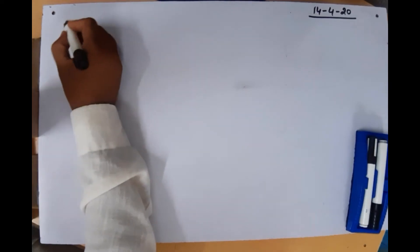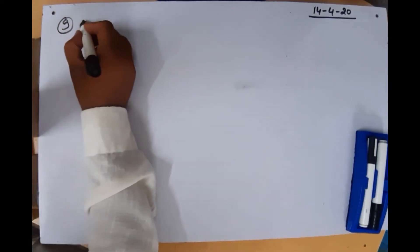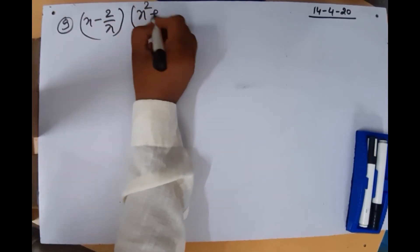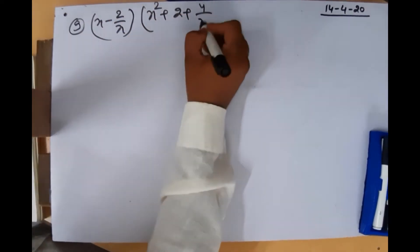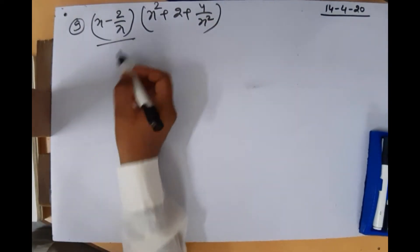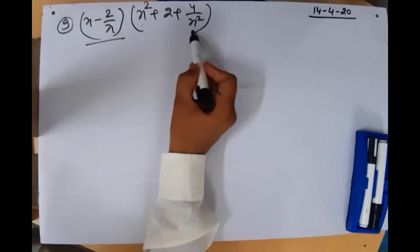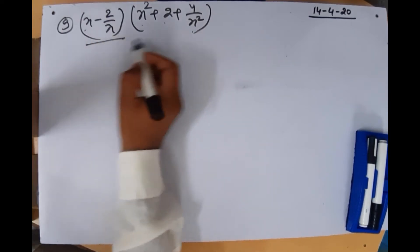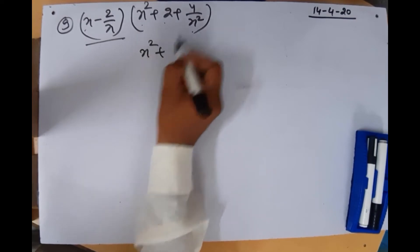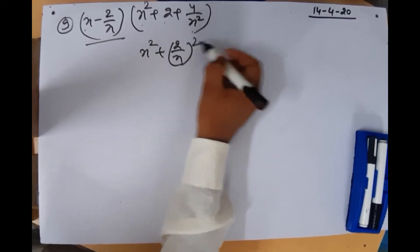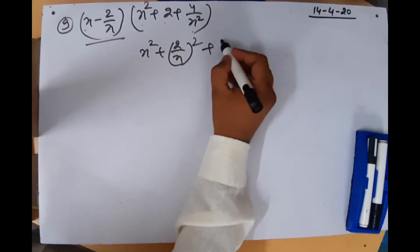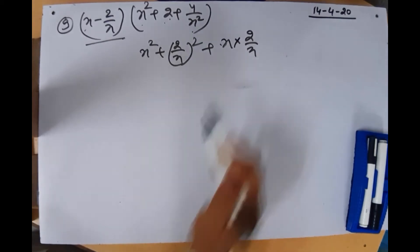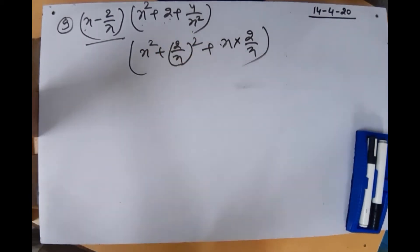Now question number 9: (x − 2/x)(x² + 2 + 4/x²). This is of the form (a − b)(a² + b² + ab). Here a = x and b = 2/x. We can verify: b² = (2/x)² = 4/x², and a·b = x · (2/x) = 2, which matches. So we have broken this expression into the a³ − b³ form.